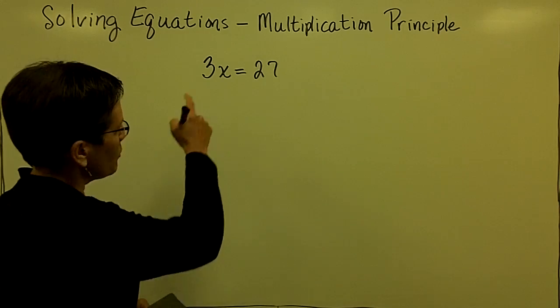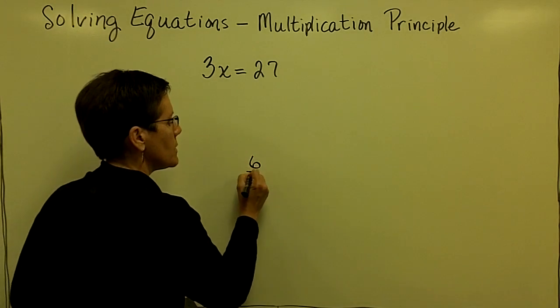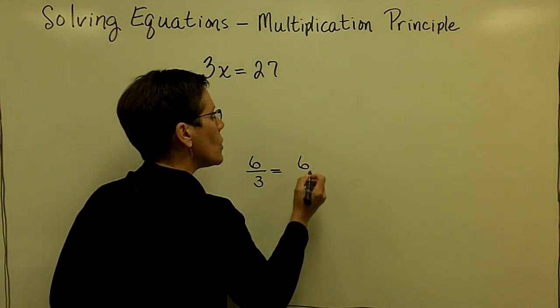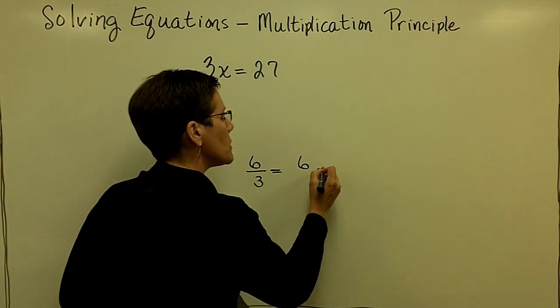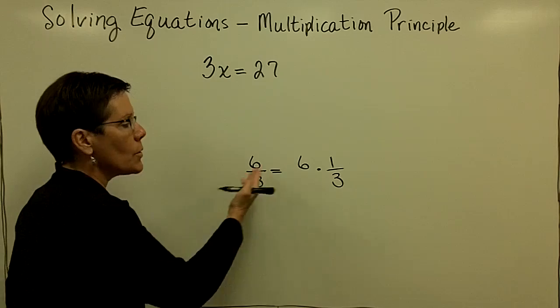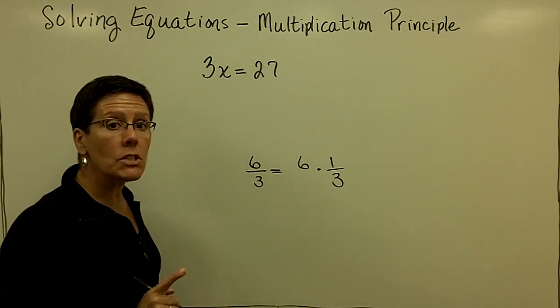Let me just illustrate that before we solve this equation. Please know that 6 divided by 3 is the same thing as if I took the whole number 6 and multiplied it by one-third. Those two statements are exactly alike, and that's why, while this is called the multiplication principle,